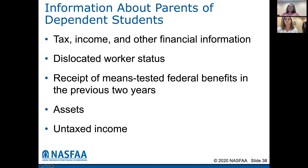Information about parents of dependent students: we need tax information, income, and other financial information such as assets — cash, savings and checking accounts. Do they own a business with more than 100 employees? Their dislocated worker status, receipt of means-tested federal benefits in the previous two years such as free or reduced price lunch or WIC benefits. We also need to know about assets — any assets you own that do not include your primary residence, such as vacation homes, rental property, other types of real estate, and any untaxed income such as payments into a 401k or 403b, which will be on your W-2.